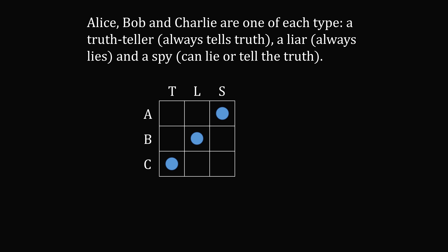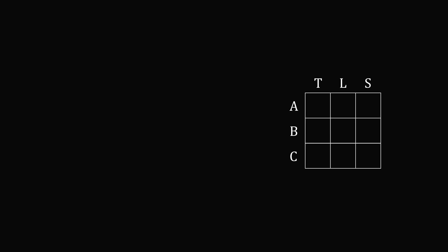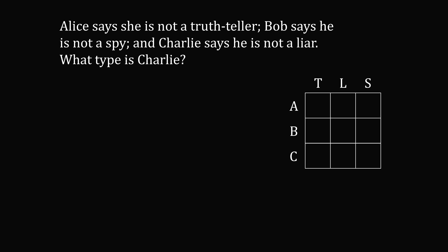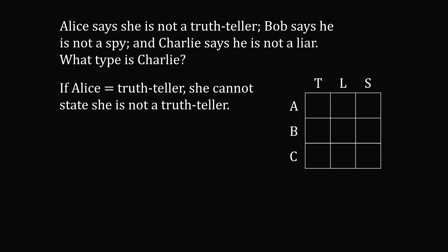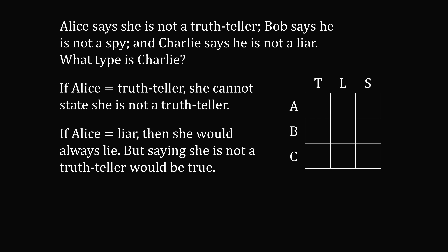So let's figure this out from the given information. If Alice were a truth teller, she cannot say she is not a truth teller — that would be a contradiction. So it's not possible for Alice to be a truth teller. If instead Alice were a liar, she would always lie, but saying she's not a truth teller would then be a true statement. So that means Alice has to be a spy. We can eliminate the row and the column.